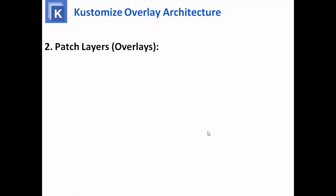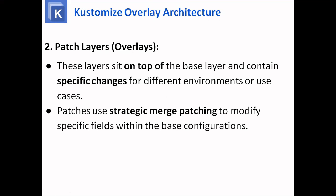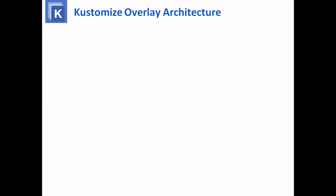The second one is the patch layer, that is overlays. We add the overlays YAML and in that the patches are added. This layer sits on top of the base layer and contains specific changes for different environments or use cases — so base plus these are the overlay. The patches use strategic merge patching to modify specific fields within the base configurations. Multiple patch layers can be applied sequentially to build up more specific configuration.